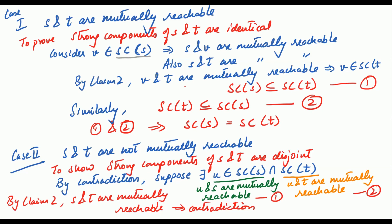So we have proved that strong components of any two nodes are either identical or completely disjoint. We shall look at more applications of DFS in the next class.